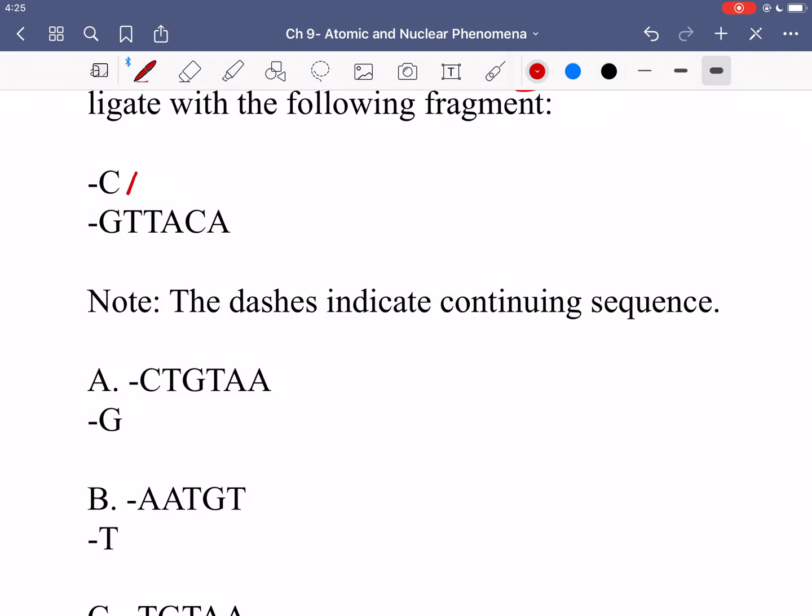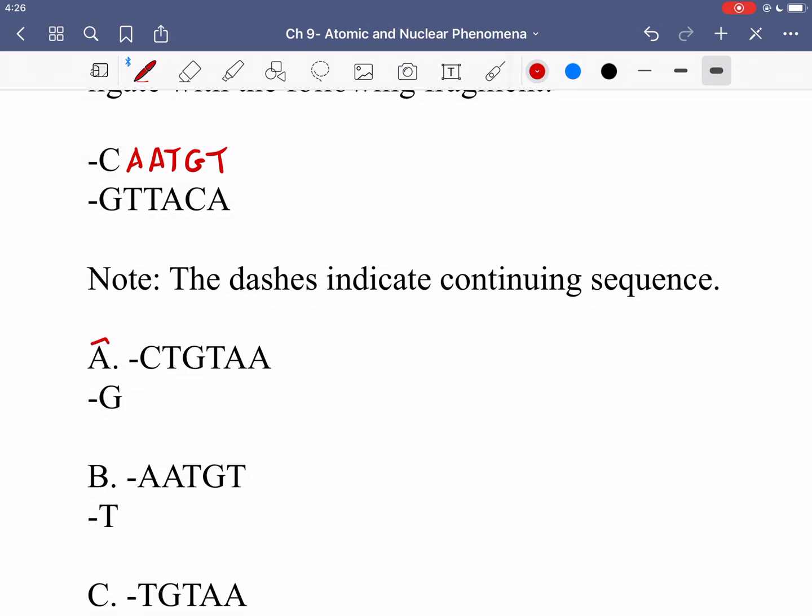So complementary to the T is going to be an A over here, A over here, a T over here, a G with this C and then this A requires a T. And so the one which matches this is going to be option A. Option A is giving the sequence, so the C, T, G, T, A, A, and then that final, this is written in the five prime to three prime, that's why it looks like it's the other direction, but of course we're talking about the complementary strand. And so there would be a final C over here, and then down here there would be that G, that's this G, which was shown over here. So the restriction enzyme cut like this, and so A is a complementary strand.